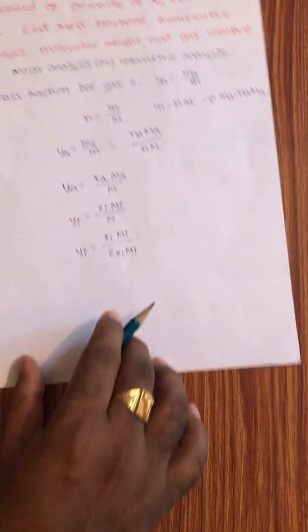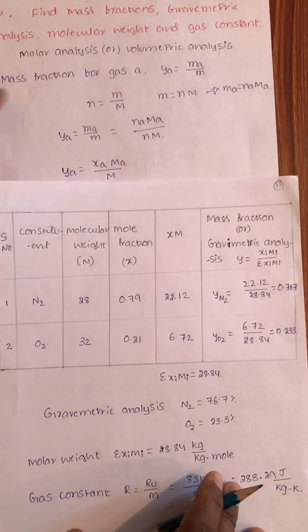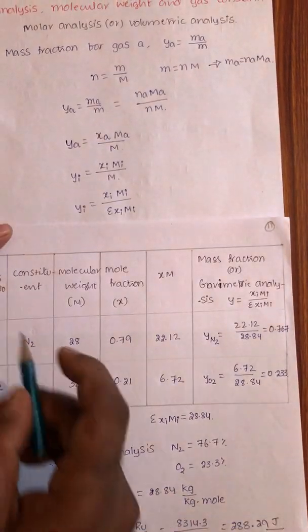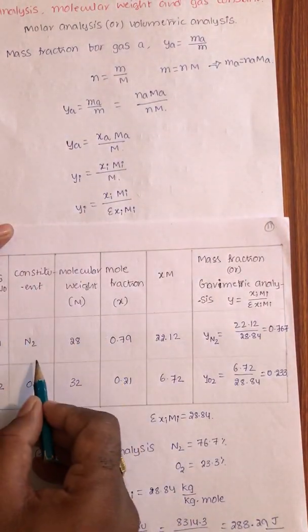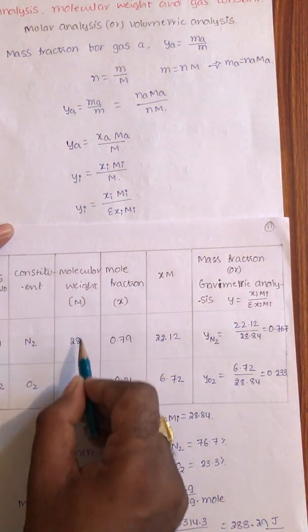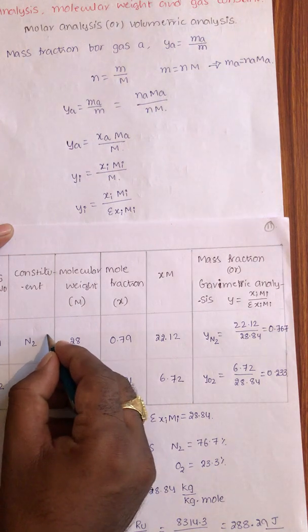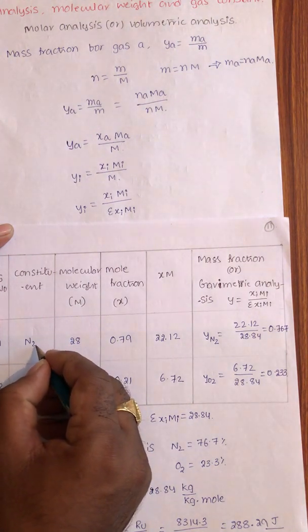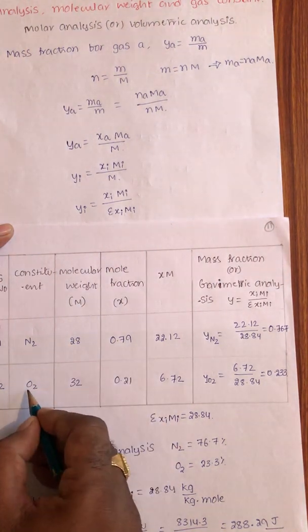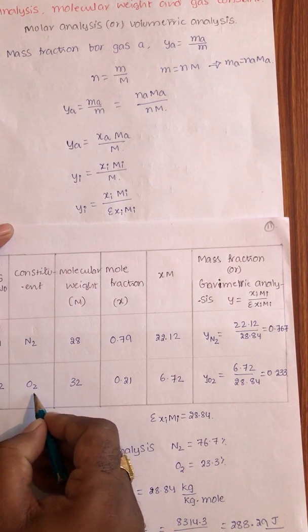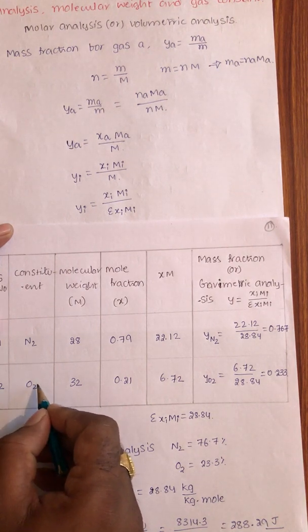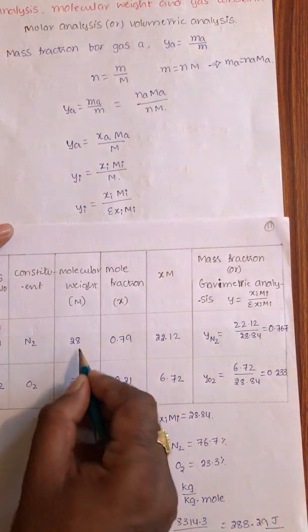Now let us construct a simple table. Serial number, constituent gases. There are two gases: Nitrogen and Oxygen. Molecular weight for nitrogen is 28, and oxygen is 32.